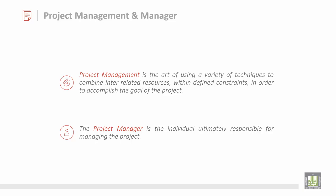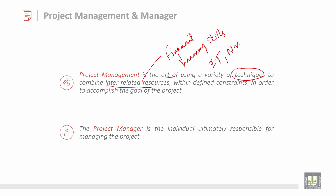Project management is the art of using a variety of techniques to combine interrelated resources. Interrelated resources include financial resources, human skills, information technology, and natural resources. These resources come with defined constraints — constraints meaning limitations or restrictions. For example, a time constraint makes it impossible to do everything, restricting the project to be accomplished within time in order to meet its goal.